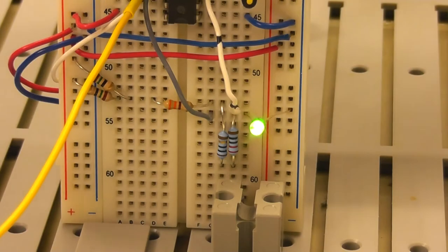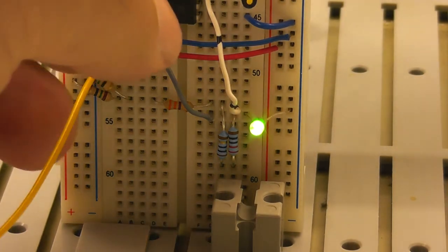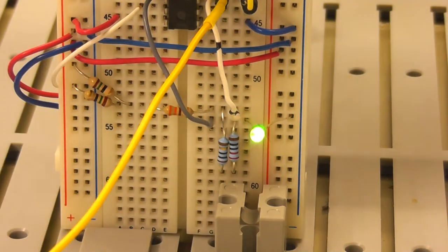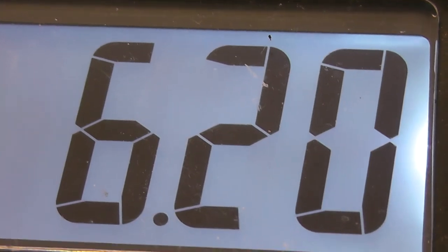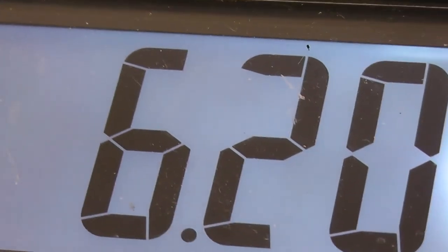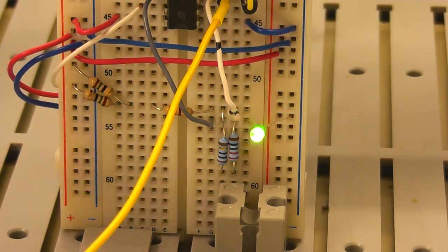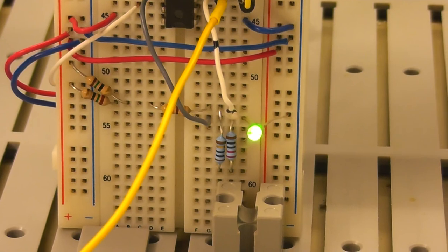If I connect the multimeter now to the other point, I have about 6.2 volts. That's not exactly 6.5 but it's okay. And so with this little circuit I get my two references for the UAA180.